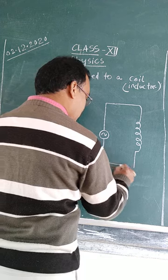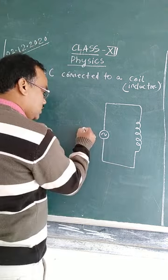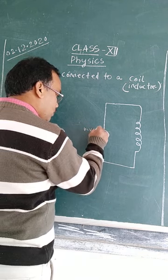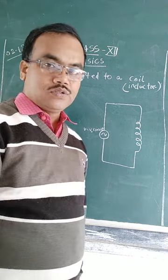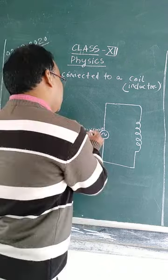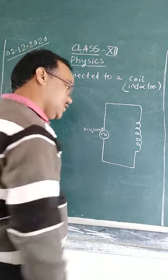AC voltage supply. So AC voltage V is equal to V naught sine omega T. V equals V naught sine omega T voltage supply. Voltage is a function of time.